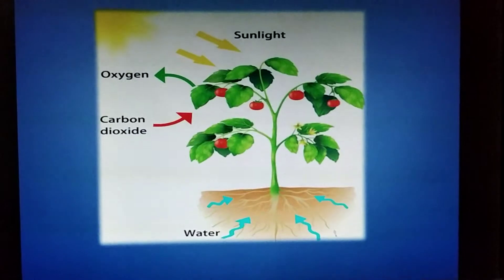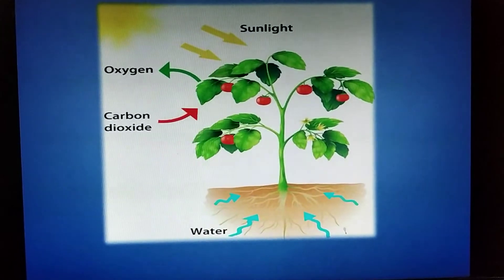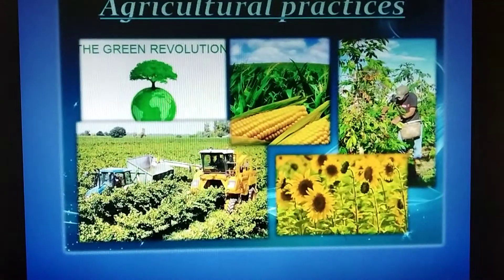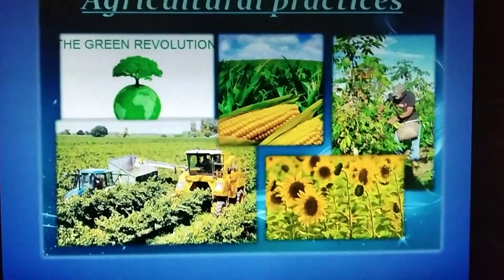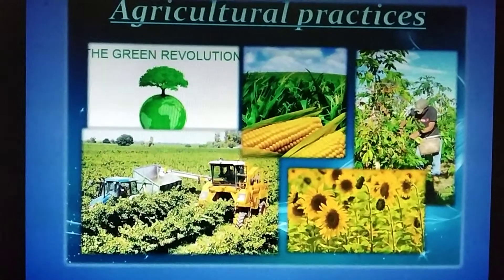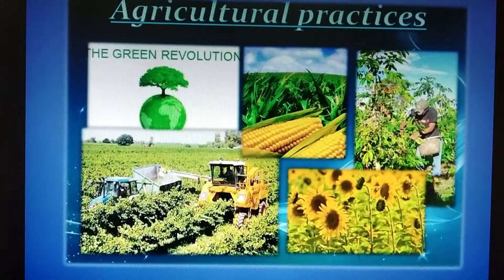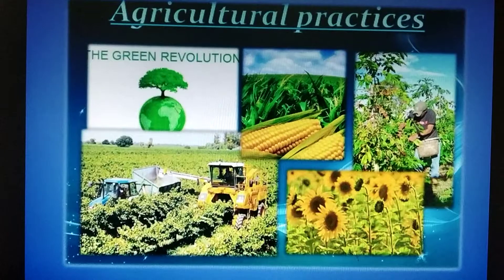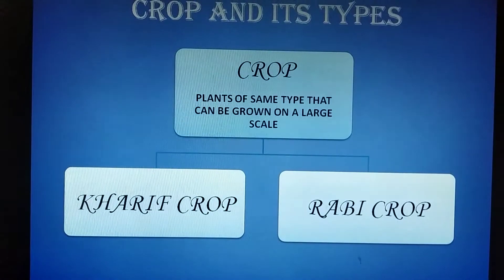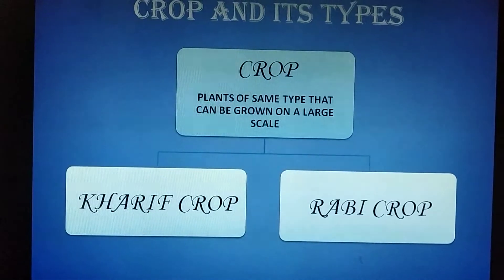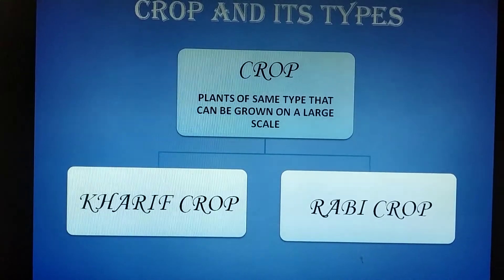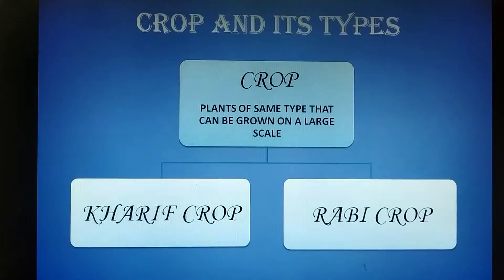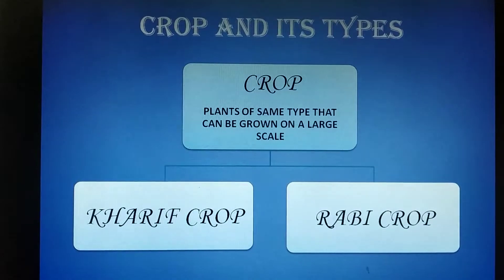Farmers adopt various tasks to grow crops, which we refer to as agriculture practices. First, what are crops? When the same kind of plants are grown at a place on a large scale, it is called a crop. For example, if you are growing a crop of wheat, all the plants should be wheat only — that is called a crop.